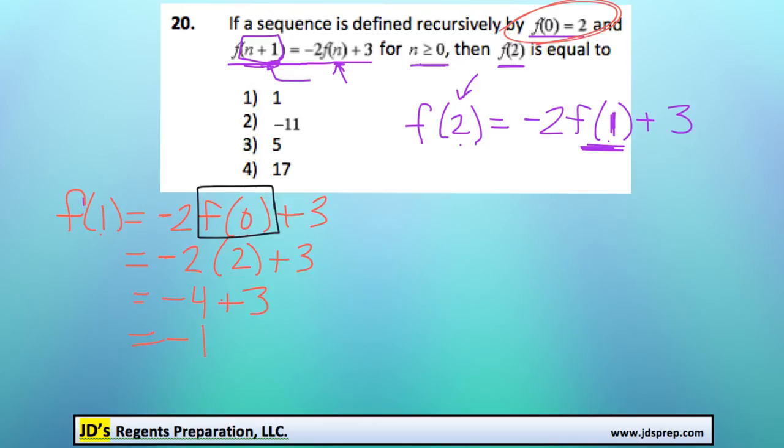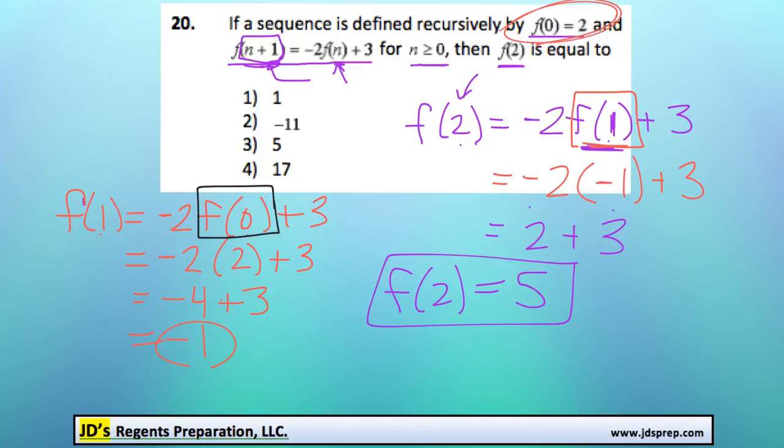Which is great, because now we know f(1) is equal to -1. So moving back over to the right-hand side here, we can replace f(1) with -1. And just figure this out. So -2 times -1 is 2. And 2 plus 3 is going to get us 5. So f(2) is equal to 5.